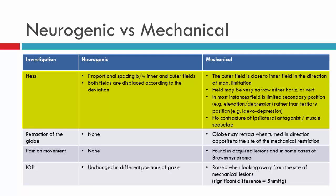In terms of the HES chart, with mechanical restrictions we'll see a narrowing of the fields — the outer field will be very close to the inner field, as opposed to neurogenic, where there's much more proportional spacing between the inner and outer fields. Two features relating to mechanical restrictions we haven't discussed are retraction of the globe, pain on movement, and intraocular pressure. Where there is a mechanical restriction, you may note retraction of the globe, pain on movement, or an increase in intraocular pressure when looking away from the site of the mechanical lesion. This does not occur in neurogenic palsies.